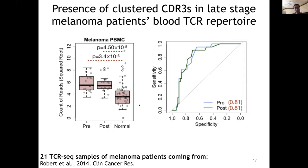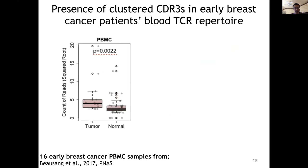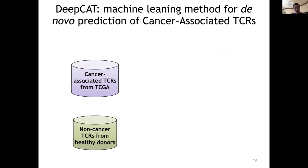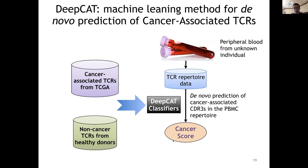Late-stage melanoma is kind of boring because no one needs to predict that — it's very obvious. So we next checked if it's possible to detect such TCRs even in early-stage cancers. Even though the signal is much less significant, we can still see a difference between breast cancer patients and controls. That motivated us to develop a deep learning algorithm where we use cancer-associated TCRs and non-cancer TCRs from donors to train a deep convolutional neural network classifier, which gives us a prediction of cancer scores.